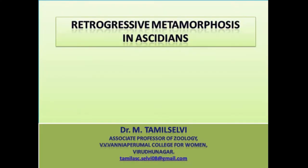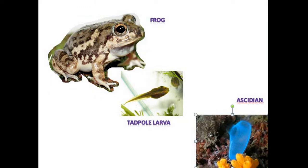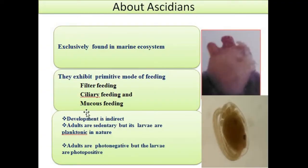Today, let us see about the retrogressive metamorphosis in Ascidians. Remember that in the Animal Kingdom, only two groups exhibit this particular kind of event. Number one is Balanoglossus, which is placed in the class Amphibia. Number two is Ascidium, which is kept in the subphylum Urochordata. As the larva of Ascidium is morphologically similar to the larva of the frog, hence the name tadpole larva. Before going to study the retrogressive metamorphosis in Ascidium, you should gain a little knowledge about the Ascidians.